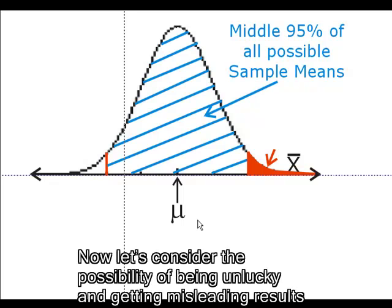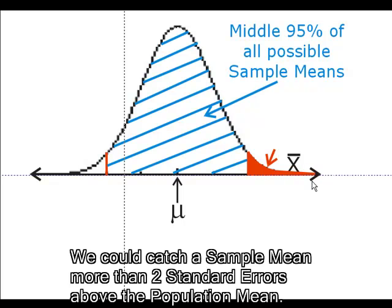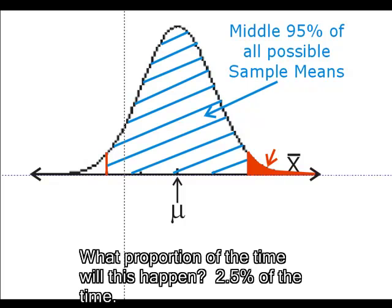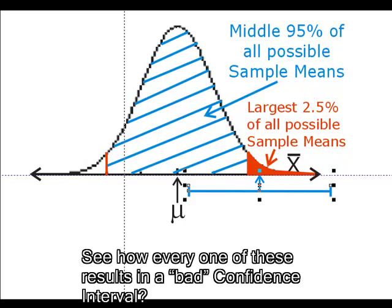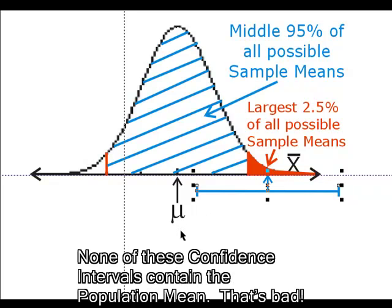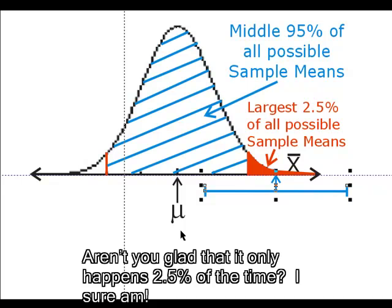Let's consider the possibility of being unlucky and getting misleading results. We could catch a sample mean more than two standard errors from the population mean. What proportion of the time will this happen? 2.5% of the time. See how every one of these results in a bad confidence interval? None of these confidence intervals contain the population mean. That's bad. Aren't you glad that it only happens 2.5% of the time?